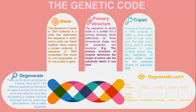The primary structure determines the sequence of amino acids in a protein. For example, the primary structure of an enzyme determines the shape of the active site and the substrate it can bind. A series of three bases in a DNA molecule is called a base triplet and codes for one amino acid. The DNA strand used in protein synthesis is called the template strand. The code is described as degenerate.